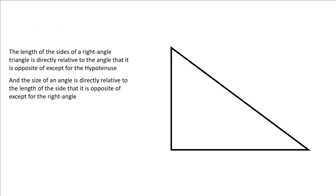The length of the sides of a right angle triangle are directly relative to the angle that they are opposite to. This doesn't apply to the hypotenuse and the size of an angle. The size of an angle is directly relative to the side that it is opposite of — this does not apply to the right angle. Notice here in this example: angle A is directly relative to side A. You can imagine as angle A increases or decreases in size, the length of side A would change.